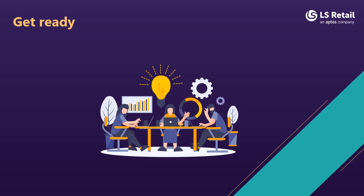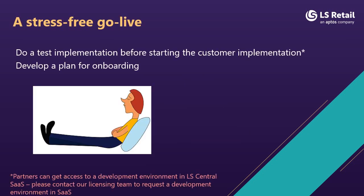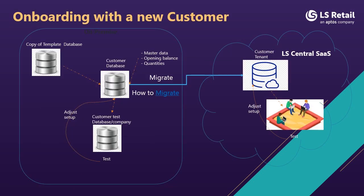You will use the template database to complete the application setup for new customers. Please note that when you have signed the CSP, you can request a development environment from our licensing team. You can use this environment for demos or any testing. When onboarding new customers, copy the database on-premise, enter all the customer-relevant data and setup, and when it's ready to migrate to SaaS, use the cloud migration tool.